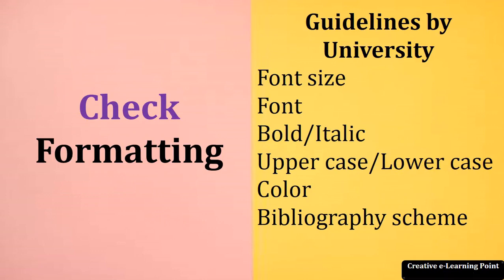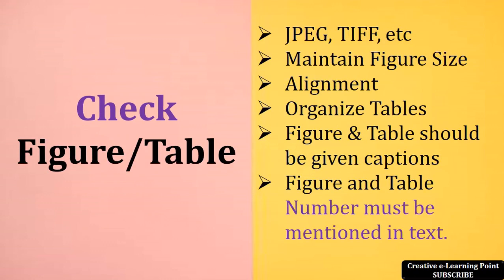Next is the formatting. For that, you need to visit the guidelines given by the university in which you are pursuing your PhD degree. In that, you need to see what kind of font and what kind of font size you should use for various places. Suppose you have a heading or subheading, then you need to see what kind of font size is required or what kind of font size is indicated by the guidelines. You need to see what kind of bibliography scheme can be used for the references for the research articles or the books. So this formatting is very important.